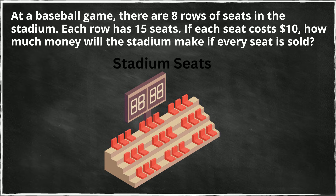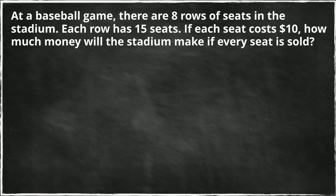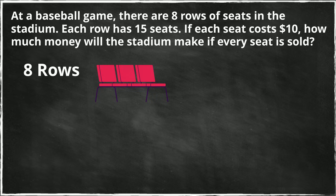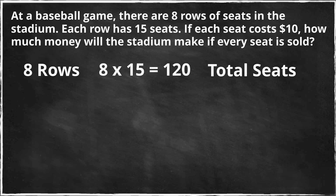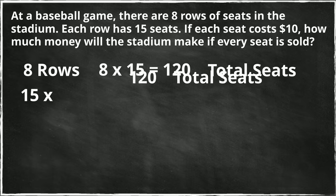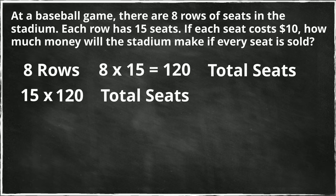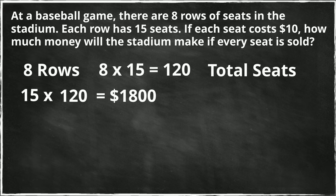So how are we going to tackle this? First, we have eight rows and there are 15 seats in each row, so let's go 8 times 15 for the total number of seats, and that equals 120. Now we get $10 per seat, so we multiply 120 times $10, and you get a grand total of $1,800. It's kind of a small stadium, but they're going to make $1,800 if every seat is sold.